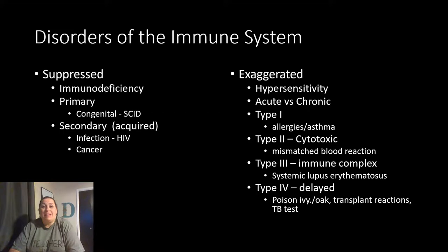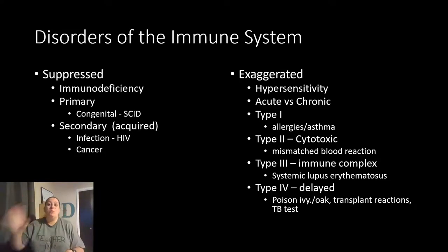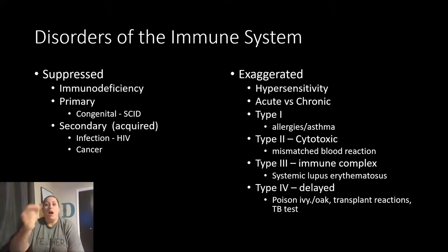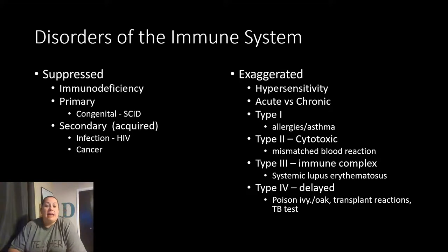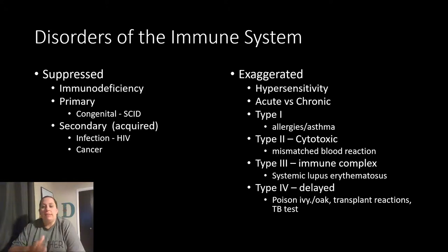On the other hand, your immune system can overreact — it can be exaggerated, meaning it responds too much to an issue. These are called hypersensitivities. There are different types: some are acute, meaning once you're exposed your immune system immediately overreacts; others are chronic, happening over time and wearing on your body. Type 1 is like allergies and asthma — when you're exposed to an allergen, your immune system overreacts. In reality that peanut didn't do anything to you, but the way your immune system reacted to it could kill you — same with a bee sting.